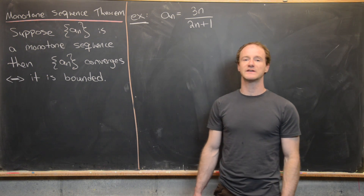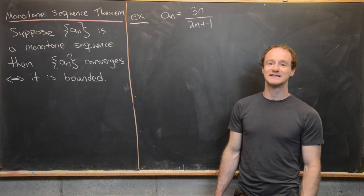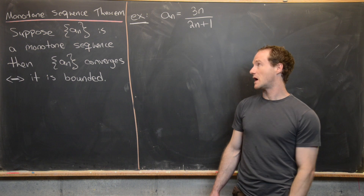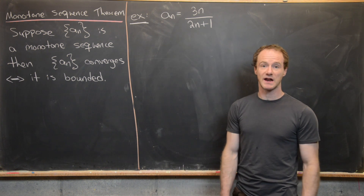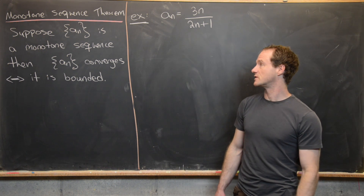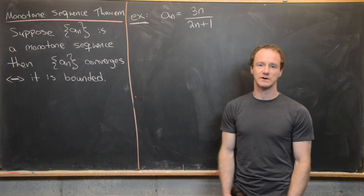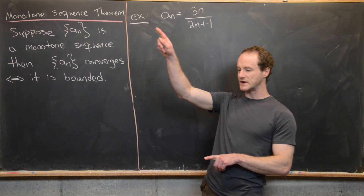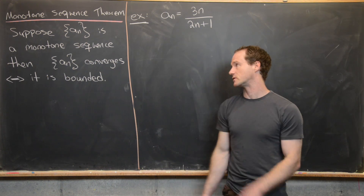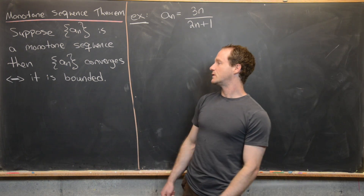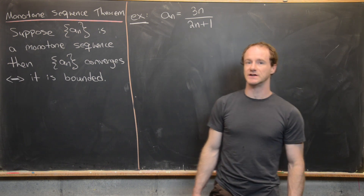Here we want to look at a couple of examples where we prove that a sequence converges via the monotone sequence theorem. The monotone sequence theorem says that if we have a monotone sequence — in other words, a sequence that's always increasing or always decreasing — then that sequence converges if and only if it is bounded.